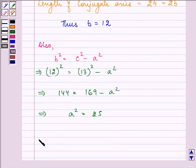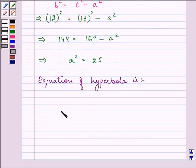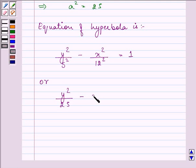So the equation of hyperbola is y²/5² - x²/12² = 1, or it is y²/25 - x²/144 = 1. That is on substituting the value of a as 5 and b as 12 in the standard equation.